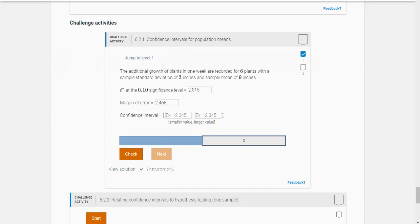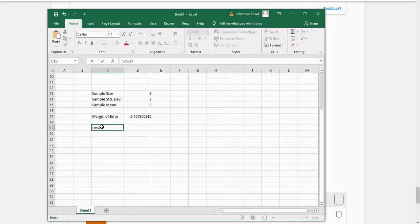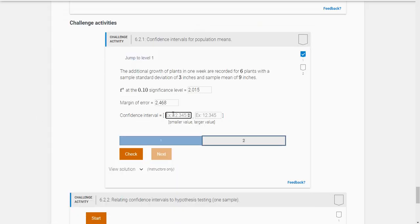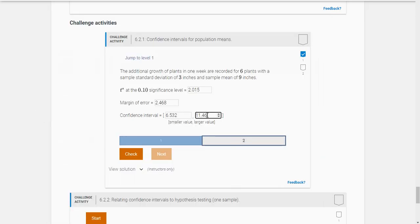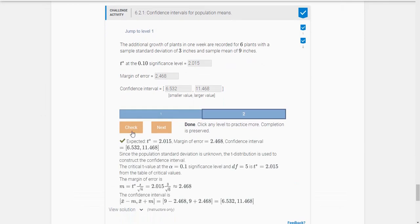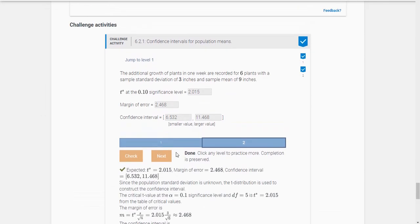And now what is our confidence interval? Well the lower bound is your point estimate minus the margin of error. So sample mean minus the margin of error. They want this to three decimal places, so it's 6.532. And the upper bound is the sample mean plus the margin of error, which looks like 11.468 when I round it. And we got them right there.